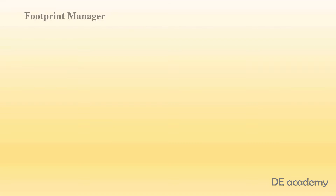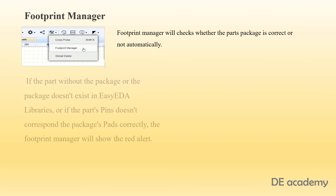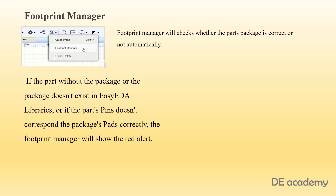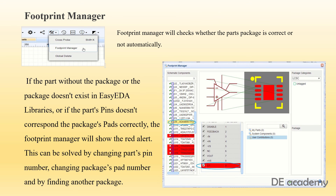Moving on to footprint manager — it automatically checks whether the part's package is correct. If the part has no package, or the package doesn't exist in EasyEDA libraries, or if the part's pins don't correspond to the package's pads correctly, the footprint manager will show a red alert. This can be resolved by changing the part's pin number, changing the package's pad number, or by finding another package.